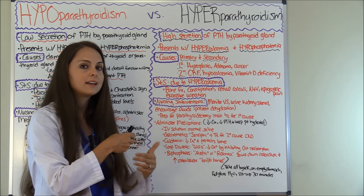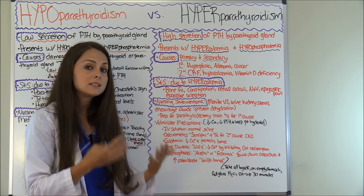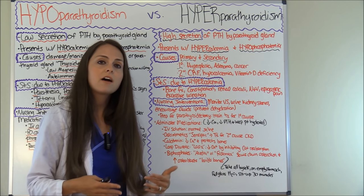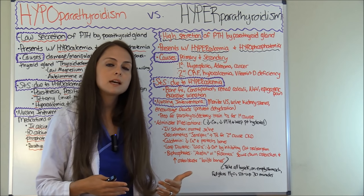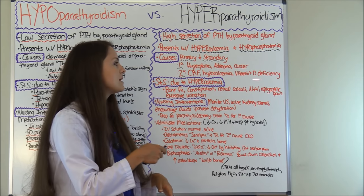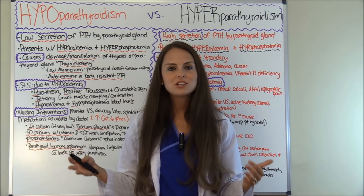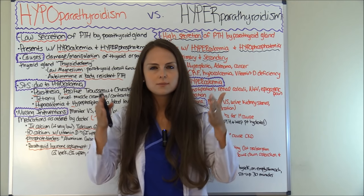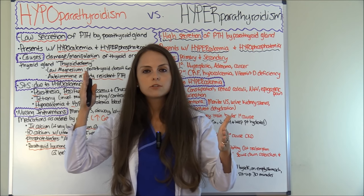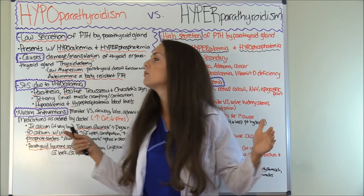Also, hypocalcemia can cause hyperparathyroidism because your parathyroid is stimulated by calcium levels. So if you have extensive hypocalcemia, you can flip yourself into this condition. Vitamin D deficiency is another secondary cause. So how does the patient look? What are the big signs and symptoms that will help you distinguish between hypo and hyperparathyroidism?